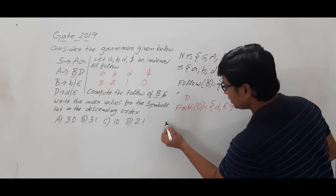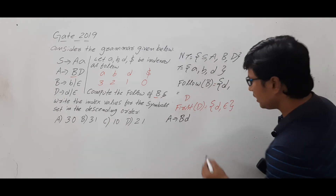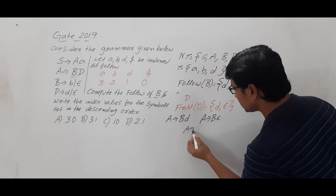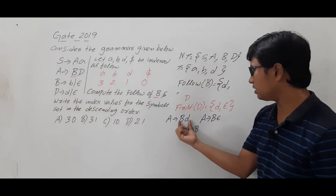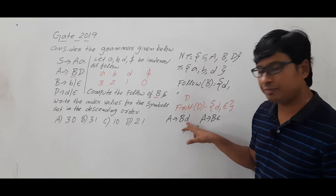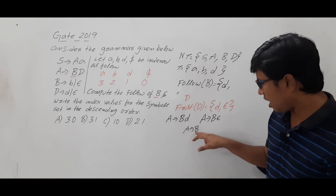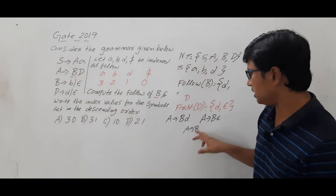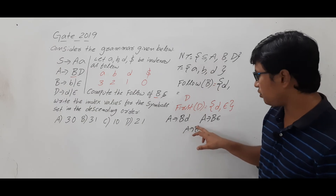Since First(D) contains ε, the production A → BD can be treated as A → B (when D derives ε). This means Follow(B) must also include Follow(A). So from A → BD, Follow(B) includes 'd' (from First(D) minus ε), and because ε is in First(D), Follow(B) also includes Follow(A).